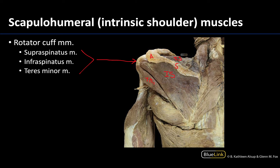Just to get our bearings: this is teres major, this is part of the triceps, and this is actually your latissimus dorsi — that superficial back muscle that extends all the way to the humerus.